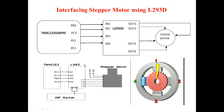To connect any motor to a microcontroller, you have to use a driver IC. The driver IC used here is the L293. The reason is that the microcontroller output voltage is a maximum of 3.3V, which provides minimum current. This minimum current is not enough to drive the stepper motor, so we use the L293 driver circuit to boost the current.